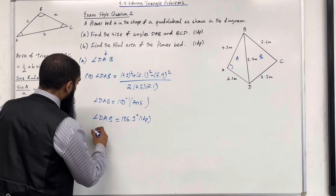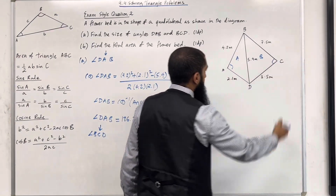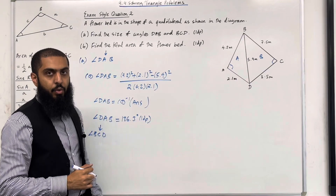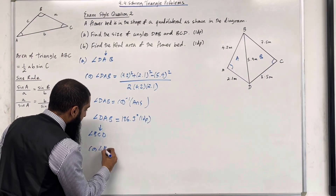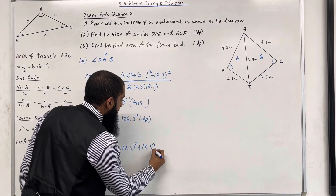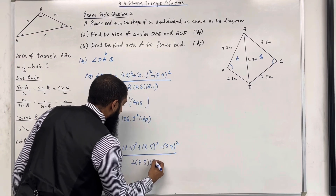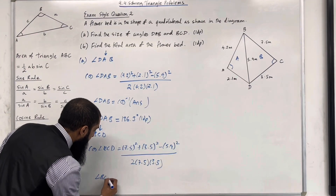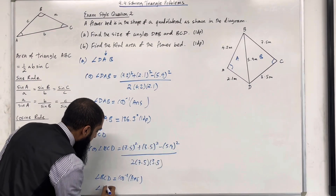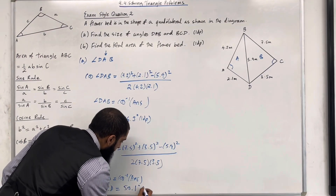Now we want to work out angle BCD. Looking at the middle letter C, we're working out angle C. We use the cosine rule again because in this triangle we are given three sides. So cos(angle BCD) equals 7.5 squared plus 3.5 squared minus 5.9 squared, all over two lots of 7.5 multiplied by 3.5. Taking cos inverse of that fraction gives angle BCD equal to 50.1 degrees to one decimal place.